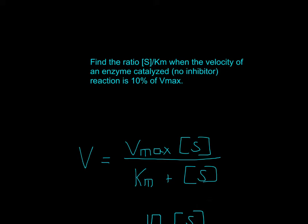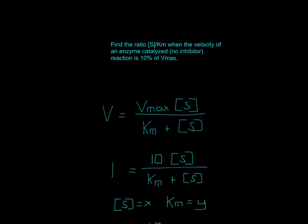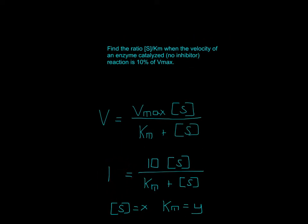So if the velocity has to be 10% of Vmax, let's say Vmax is 10, because then the velocity would be 1. And that makes sense because the velocity has to be 10% of Vmax. So if we made Vmax 10, then 10% of 10 is just 1. So now we have that.